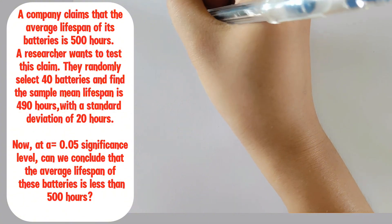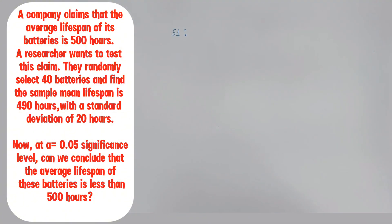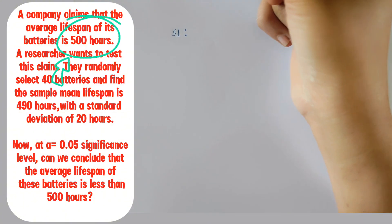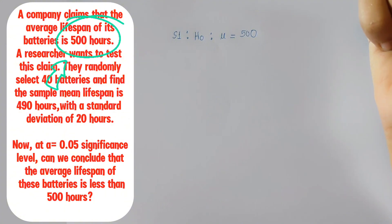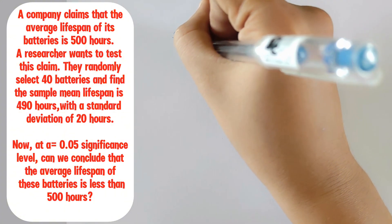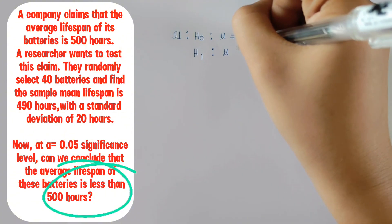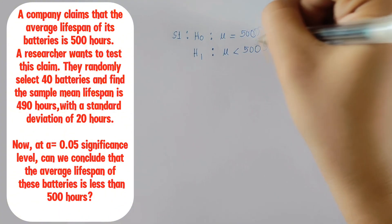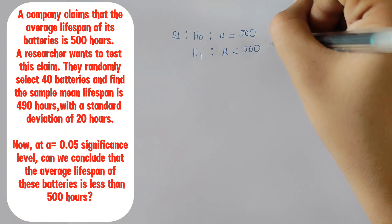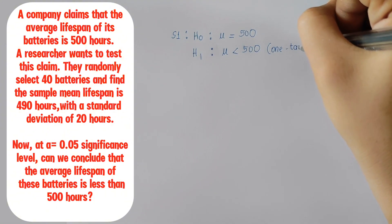The first thing we do in hypothesis testing is to set up our hypothesis. The null hypothesis for this problem is that the average lifespan is 500 hours, while the alternative hypothesis will state that the average lifespan is less than 500 hours. We will be performing a one-tailed test since we're only interested in whether the mean is less than the claimed 500 hours.